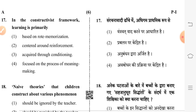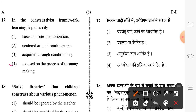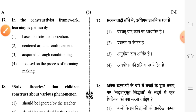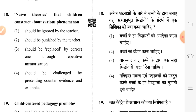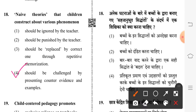Next question: in the constructivist framework, learning is primarily — fourth option is correct: focused on the process of meaning making. Eighteenth question: naive theories that children construct about various phenomena — fourth option is correct: should be challenged by presenting counter evidence and examples.